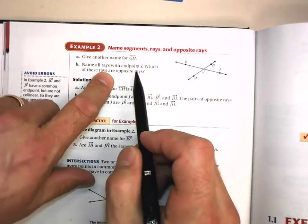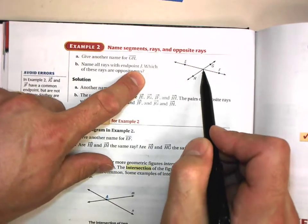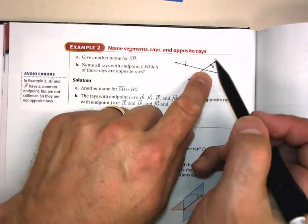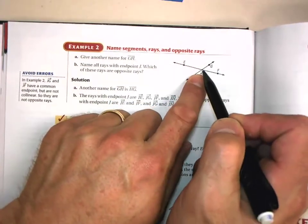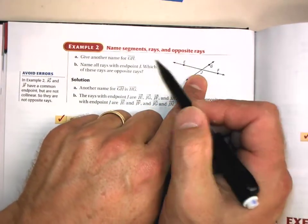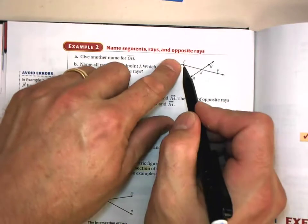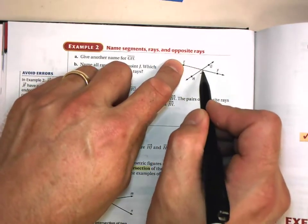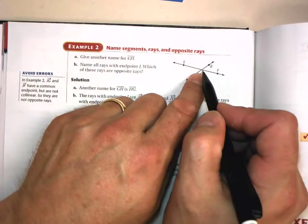Name all the rays with endpoint J. Here is an endpoint J, and let me name all the rays. So we have a ray going off in this direction. That would be ray JE going off in this direction. Remember ray EJ would start at E and go through J. That does not have an endpoint of J.